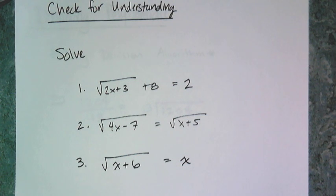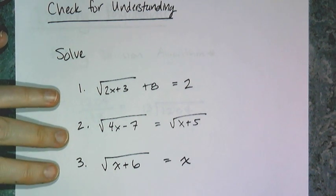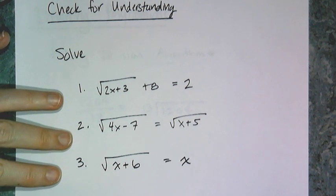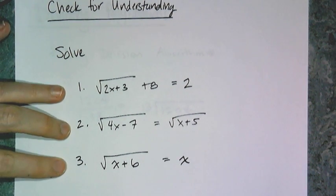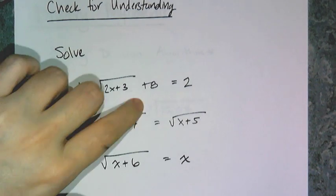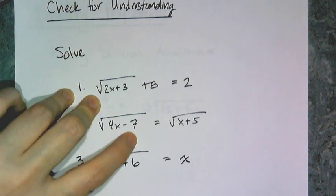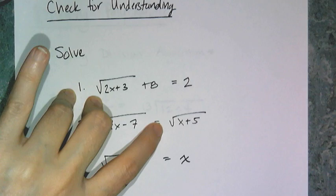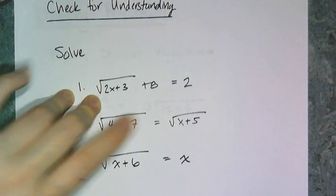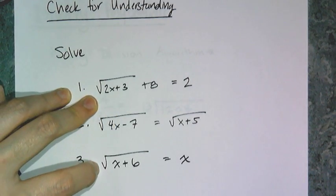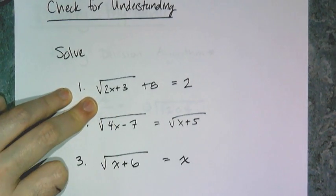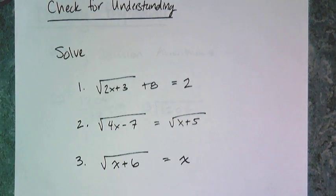And now, finally, for your check: solve these three equations. First, the square root of 2x plus 3 plus 8 equals 2. Second, the square root of 4x minus 7 equals the square root of x plus 5. Third, the square root of x plus 6 equals x. Be sure to state any extraneous solutions you may get.